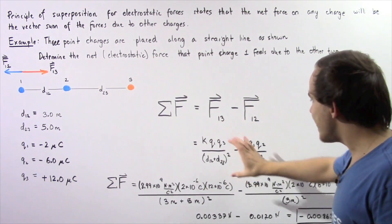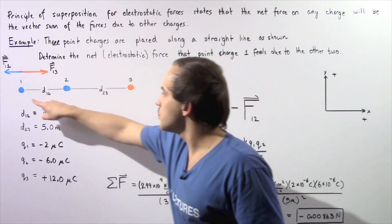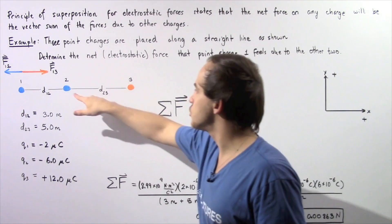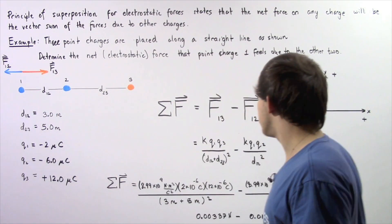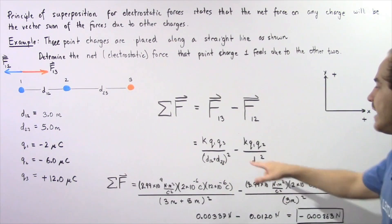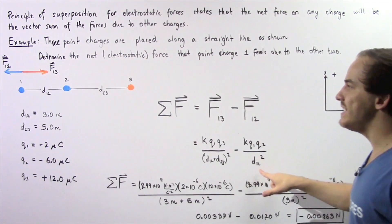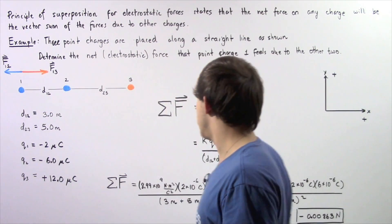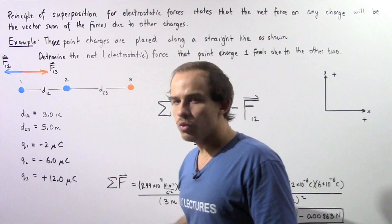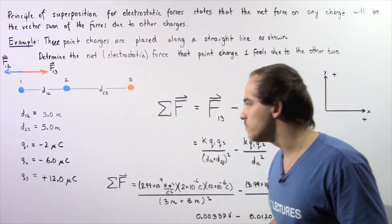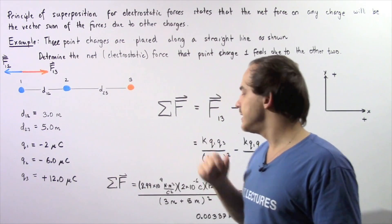Applying Coulomb's Law, F13 equals K times Q1 times Q3 divided by the distance between point charges 1 and 3 squared — that distance being d12 plus d23, or 3 plus 5 equals 8 meters. We subtract F12, which equals K times Q1 times Q2 divided by d12 squared, where d12 is 3 meters. Note that 1 microcoulomb equals 1 times 10 to the negative 6 coulombs, so we must convert all charges.